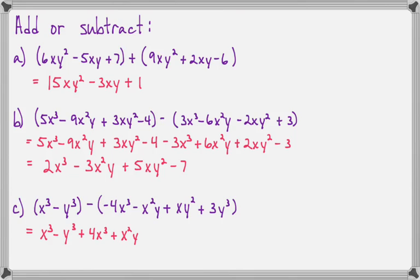Now let's look at this one. We have x³ - y³. Now we'll need to distribute this minus sign. So that's going to give us +4x³ + x²y - xy² - 3y³.